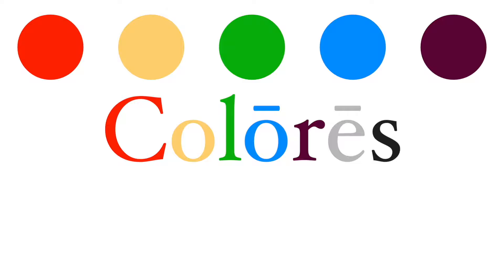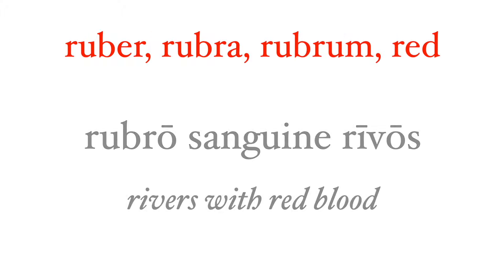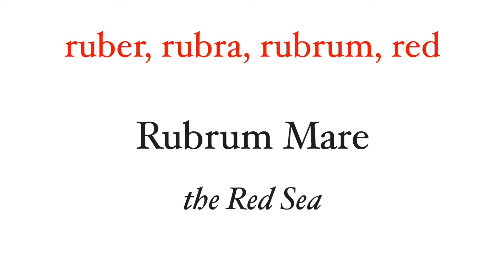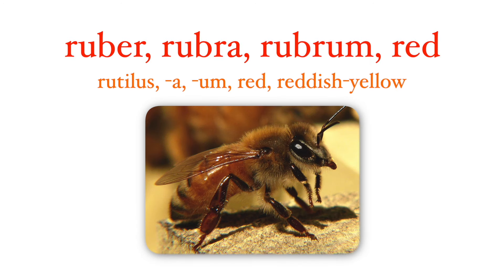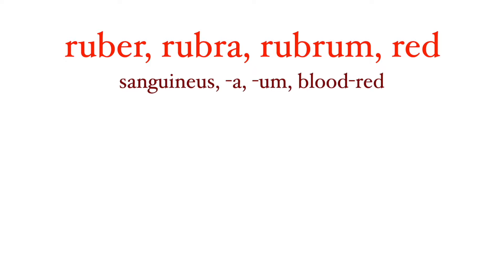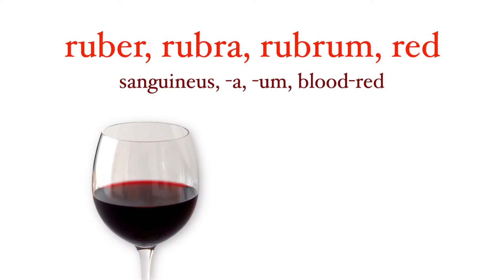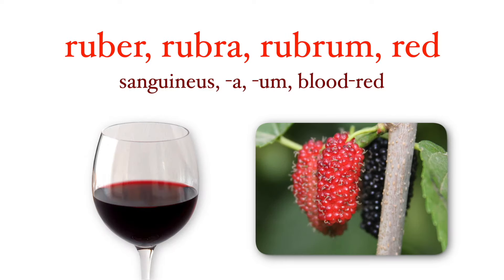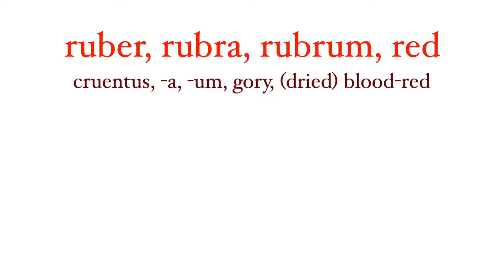Let's start with red. 'Ruber' is pretty clearly red, used by Horace to describe blood, a flame by Ovid, and the Red Sea in Latin is 'Rubrum Mare.' Other words to describe red are 'rutulus,' which is a reddish yellow used to describe a flame, and 'sanguineus,' literally 'bloody,' so this is the red color of fresh blood. Pliny describes this as the color of wine, and Ovid has blood-colored fruit of the mulberry tree in his story about Pyramus and Thisbe.